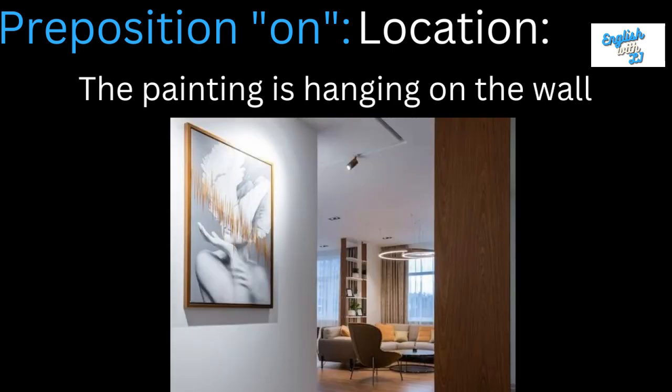The painting is hanging on the wall. This is where we'd use 'on' — the painting is on the wall. You could say the painting is in the house, generalizing the house as the location, with the painting being inside the entirety of it. But when specifically talking about the wall where the painting is located, it is on the wall. You could even combine both: the painting is on the wall in the house.